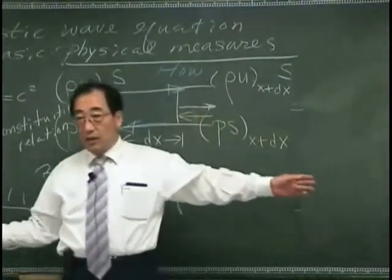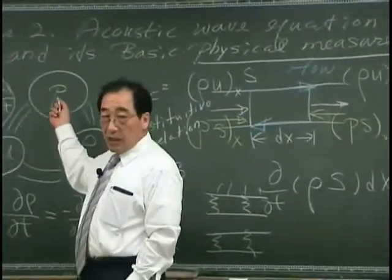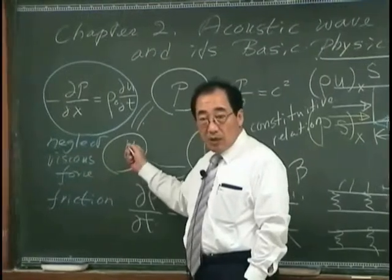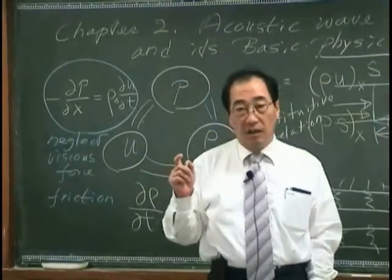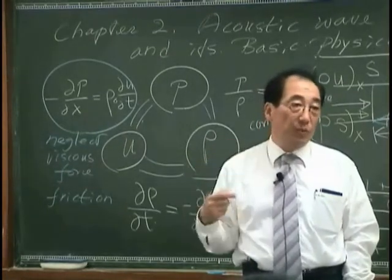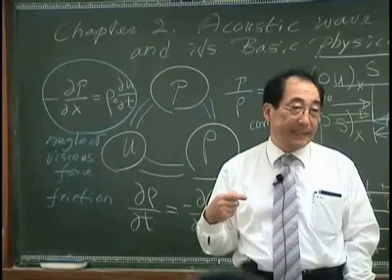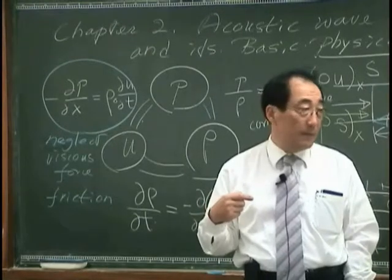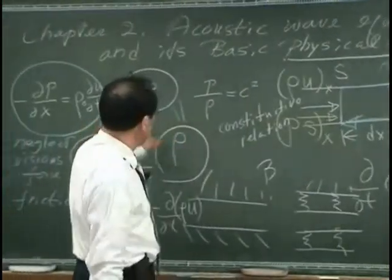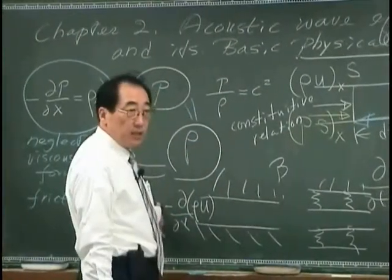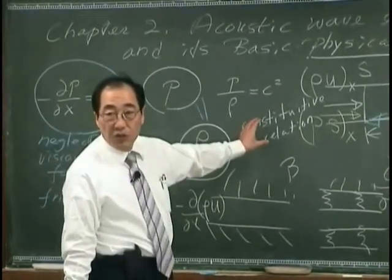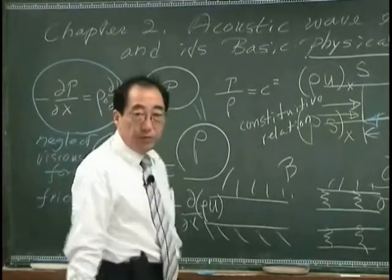And we found that differently. In this case, the pressure, velocity, density. Sorry. Velocity and the density. Are the physical parameters that are involved in acoustic wave propagation. Okay? And then we found Euler equation.